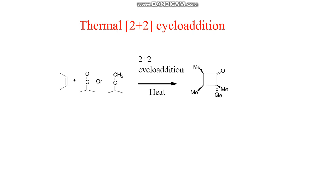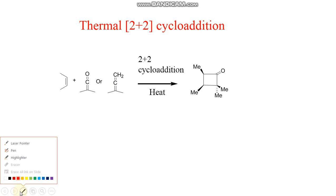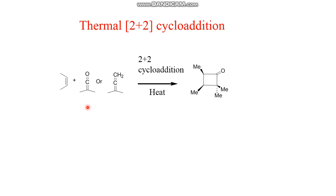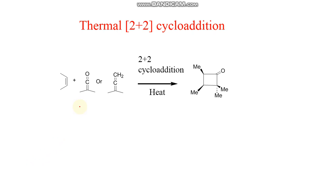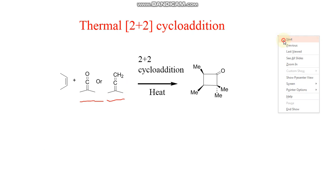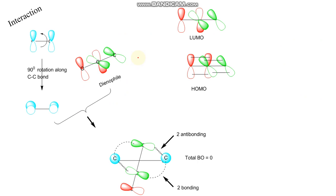Substituted ethylene and a special type of alkene, if allowed to react, will participate in 2+2 cycloaddition. Normal ethylene doesn't participate, but special types do — for example, ketene and allene. These are the special type of alkenes that participate in cycloadditions and give the desired product.